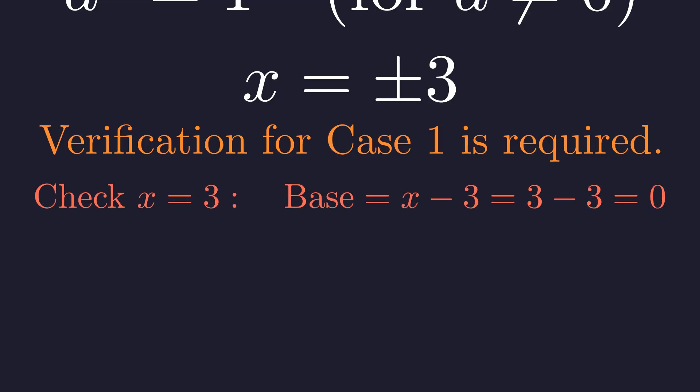First, let's check x equals 3. The base x minus 3 becomes 3 minus 3, which is 0. This leads to the form 0 to the power of 0, which is undefined. Therefore, x equals 3 is an extraneous solution.